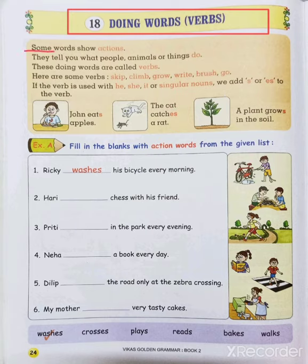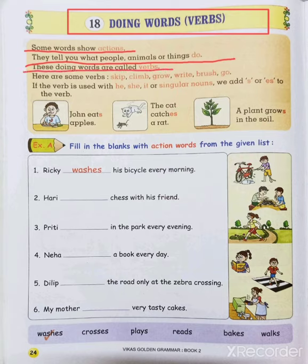Some words show actions — actions means what is happening around us. They tell you what people, animals, or things do — what action they are doing. These doing words are called verbs.